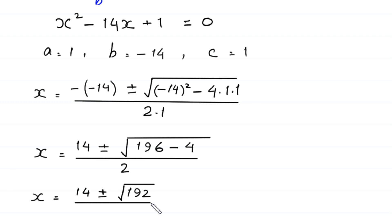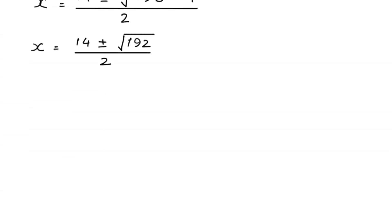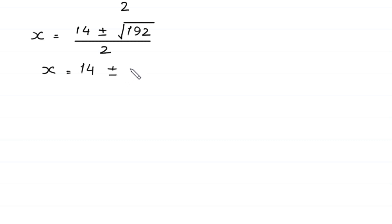Next, x is equal to 14 plus or minus the square root of 192, divided by 2. Now we need to simplify the square root of 192 by factorizing 192.